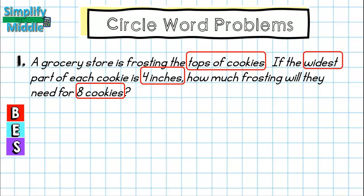Next, my S is for strategy. My strategy here, I'm going to look at each part that I have boxed and identify what is happening in the problem and how this is going to help me get to the answer.